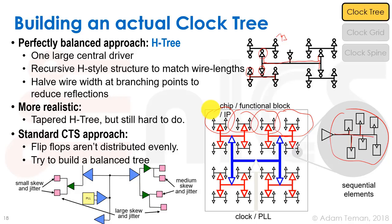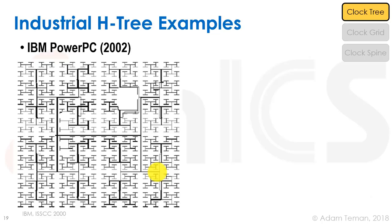The standard CTS approach builds a balanced tree assuming flip-flops aren't evenly distributed. Flip-flops that are close together are likely in the same module, communicate heavily, share the same tree branch, and have low skew. Modules further apart have medium skew. Very distant modules have few paths between them and higher skew that may need fixing. This is a more feasible approach than a perfect H-tree.